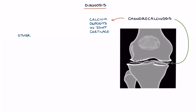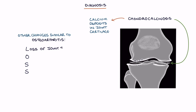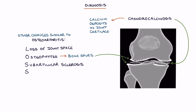Other joint x-ray changes are similar to osteoarthritis and these can be remembered with the LOSS mnemonic. L for loss of joint space. O for osteophytes, which are bone spurs. S for subarticular sclerosis, which is increased density of the bone along the joint line. And S for subchondral cysts, which are fluid-filled holes in the bone.